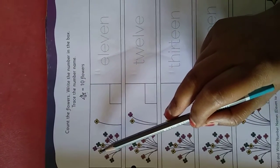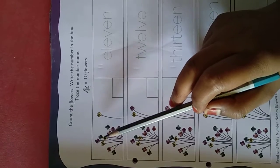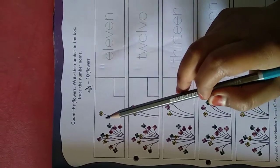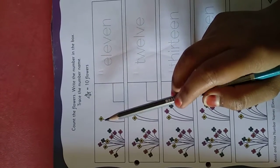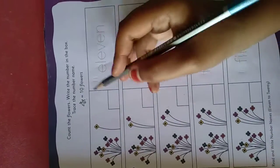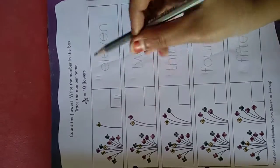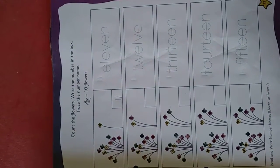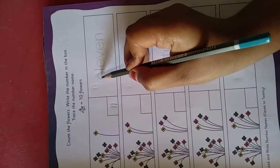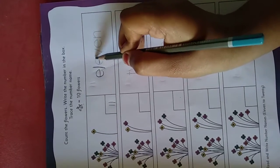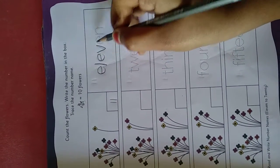So let us count: 1, 2, 3, 4, 5, 6, 7, 8, 9, 10, 11. So how many flowers are there totally? 11. Right? So write 11 here, and trace the 11. E-L-E-V-E-N. 11.